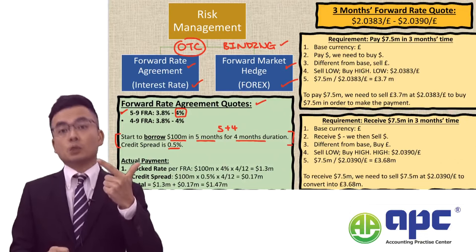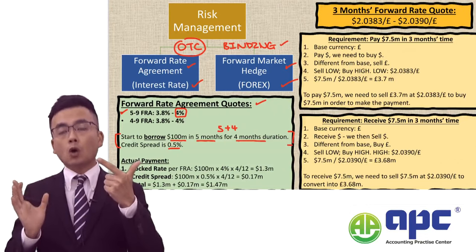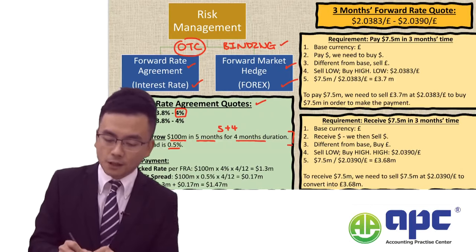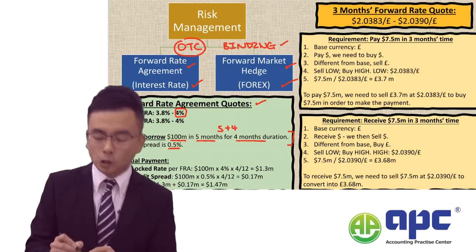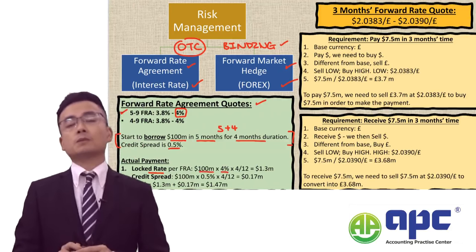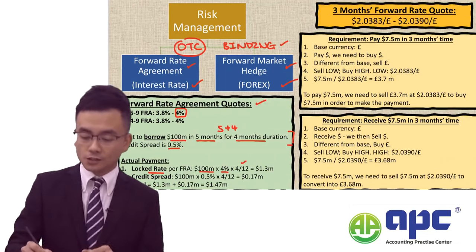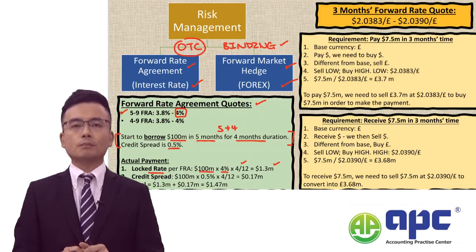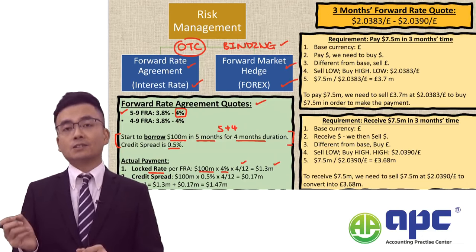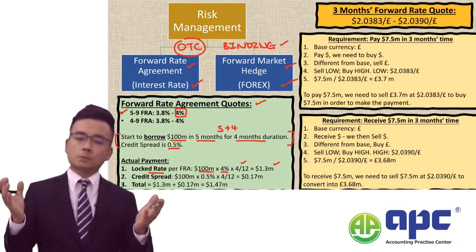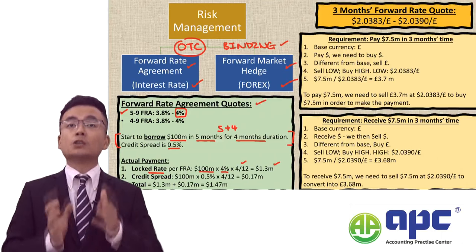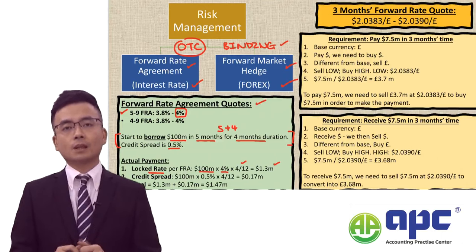If I were to use the FRA — the forward rate agreement — today I would lock in the future interest rate to borrow $100 million from the bank in 5 months' time. When computing the actual payment, firstly we take the locked rate of 4% on that $100 million, borrowed for a duration of 4 months, multiplied by 4 over 12. So we need to pay interest of $1.3 million. However, the rate we agreed is just a guaranteed rate against the future LIBOR rate — for example, if the future LIBOR rate turns out to be 4.3%, because we entered the FRA, we still use 4%.